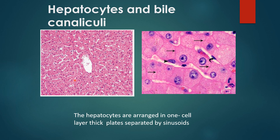Hepatocytes are arranged in one-cell-thick layers separated by sinusoids, radiating as cords from the central vein towards the periphery. These hepatocytes actually have six faces: two faces where a hepatocyte faces the next hepatocyte forming the plate, two faces where the hepatocyte faces adjacent sinusoidal spaces, and two faces above and below the page also facing nearby hepatocytes. Hepatocytes thus resemble a die with six faces.